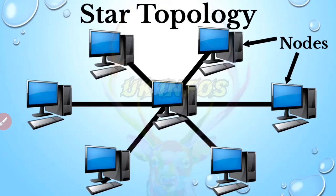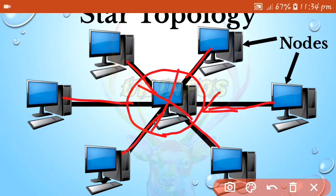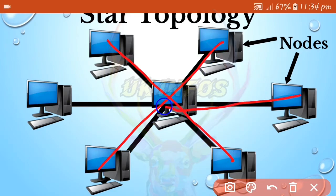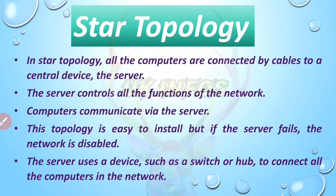In star topology, all the computers are connected by cables to a central device — the server. The server controls all the functions of the network and computers communicate via the server. This topology is easy to install, but if the server fails the network is disabled. The server uses a device such as a switch or hub to connect all the computers in the network.